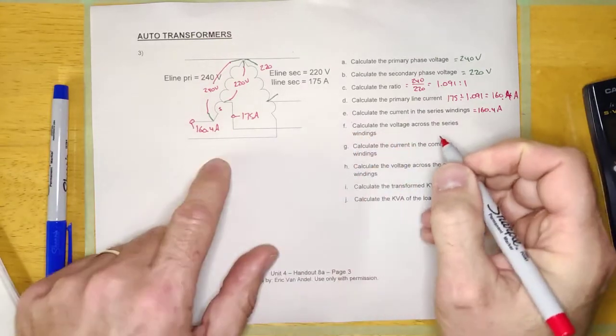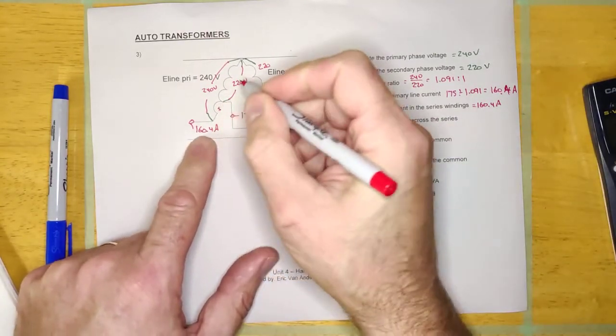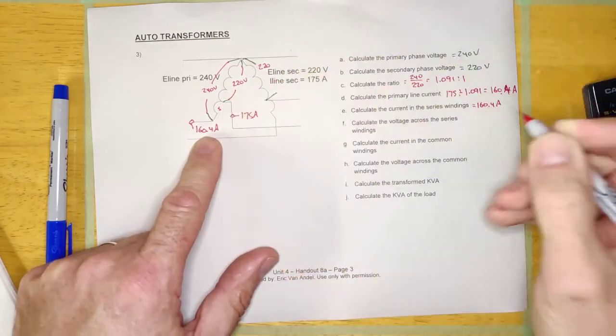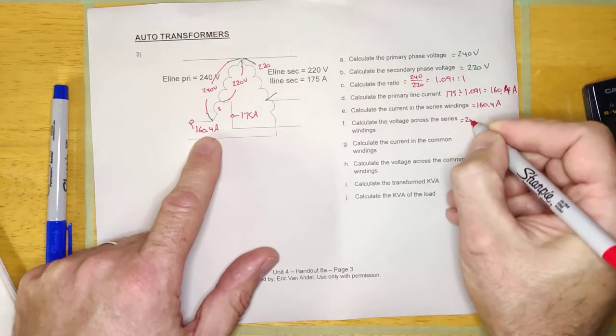Calculate the voltage across the series winding. There's the series winding. Kirchhoff's law - I've got 240 volts from here to here and 220 volts from here to here. How much is there? It's 20 volts. This is going to be 240 minus 220, 20 volts.